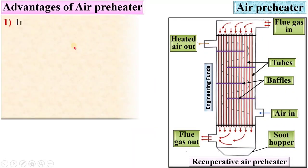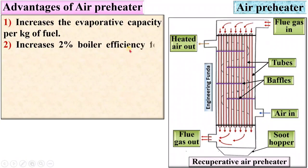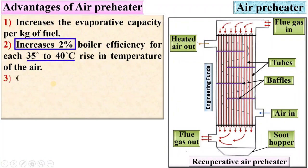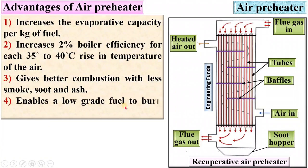Advantages of air preheater: it increases the evaporative capacity per kilogram of fuel. It increases boiler efficiency by 2% for each 35 to 40 degree Celsius rise in temperature of the air. It gives better combustion with less smoke, soot, and ash. It enables low-grade fuel to burn with less excess air.